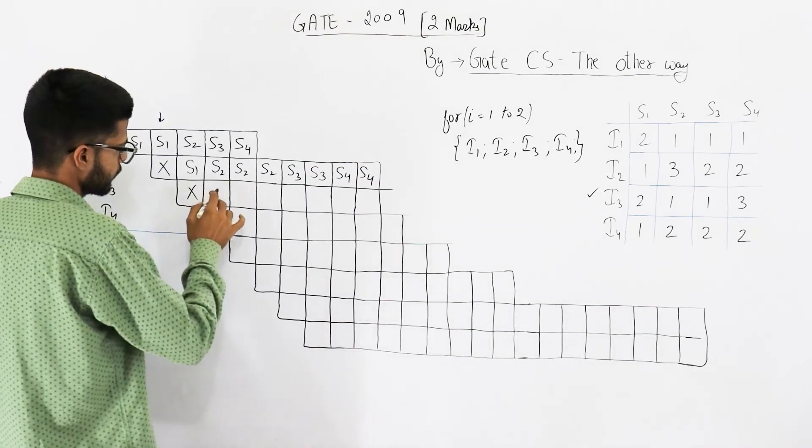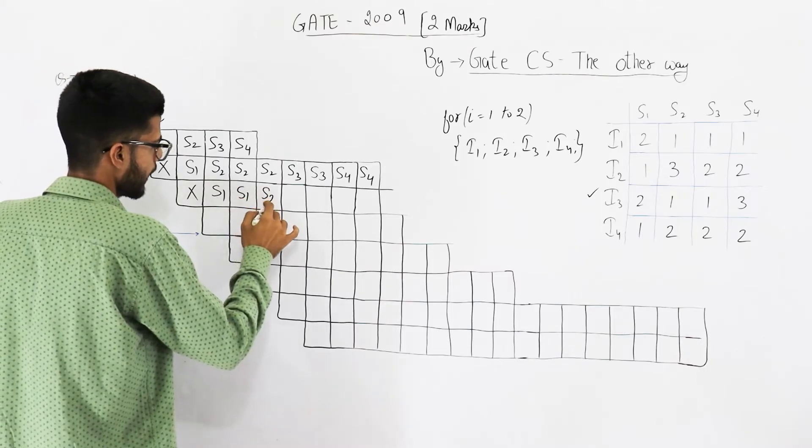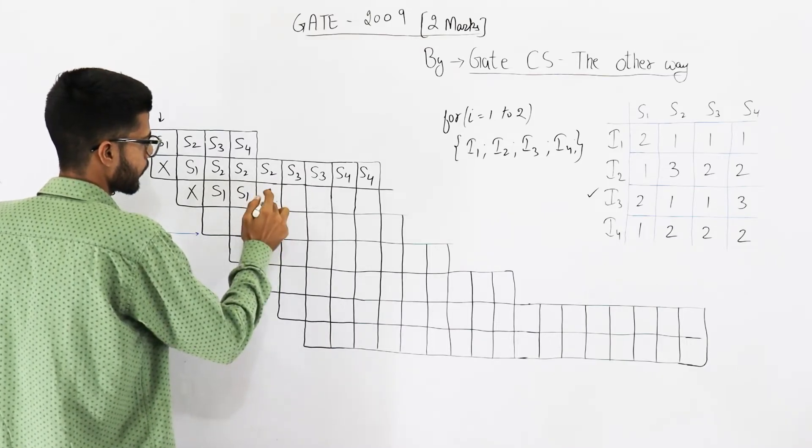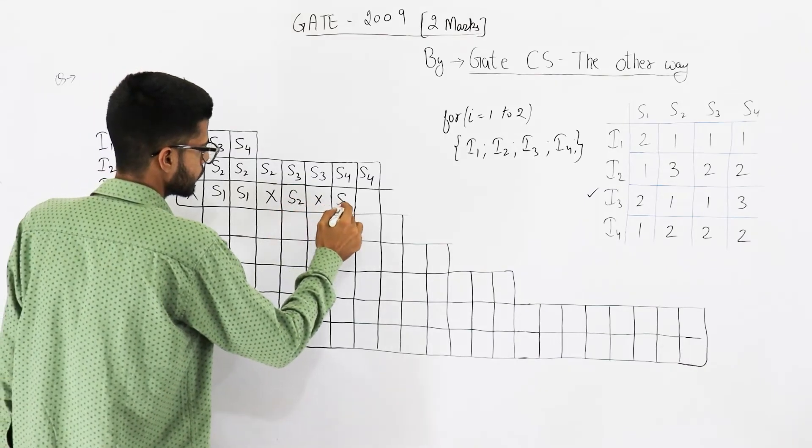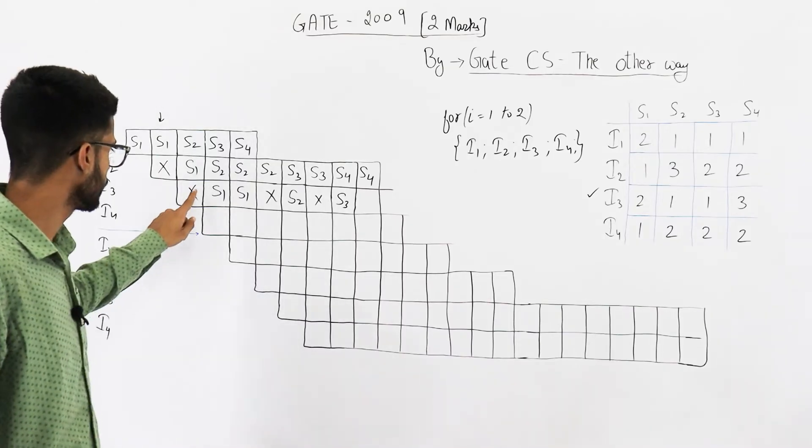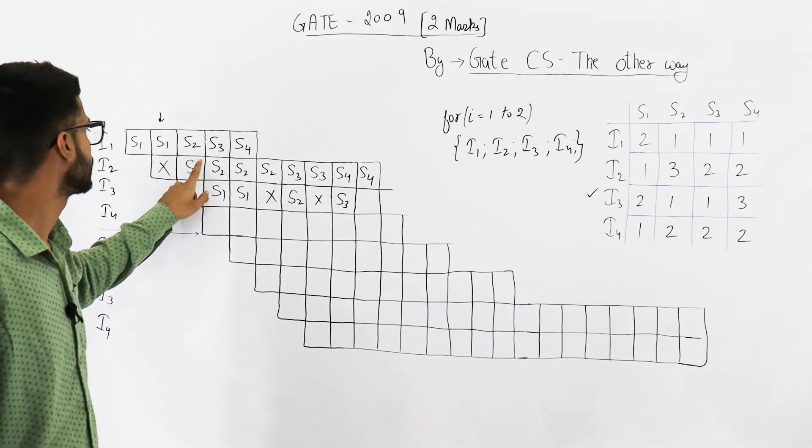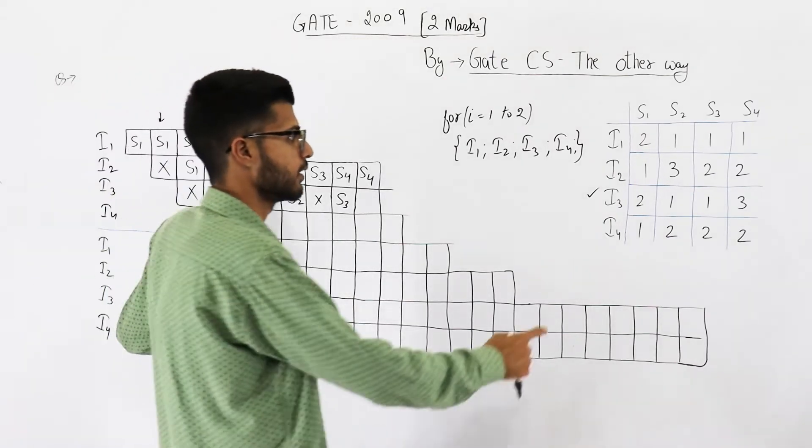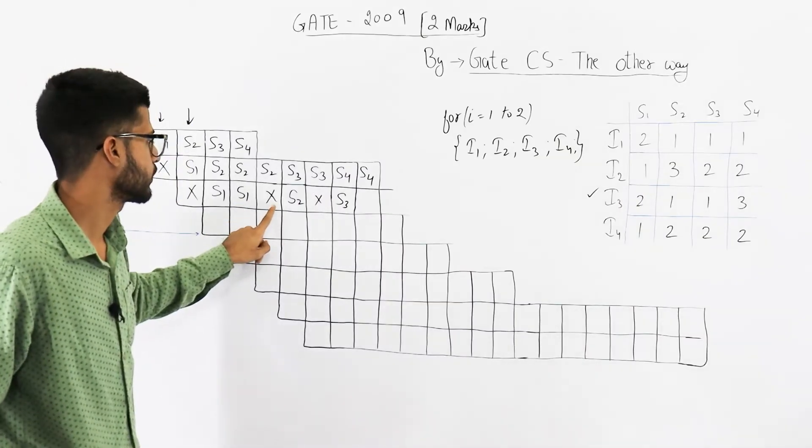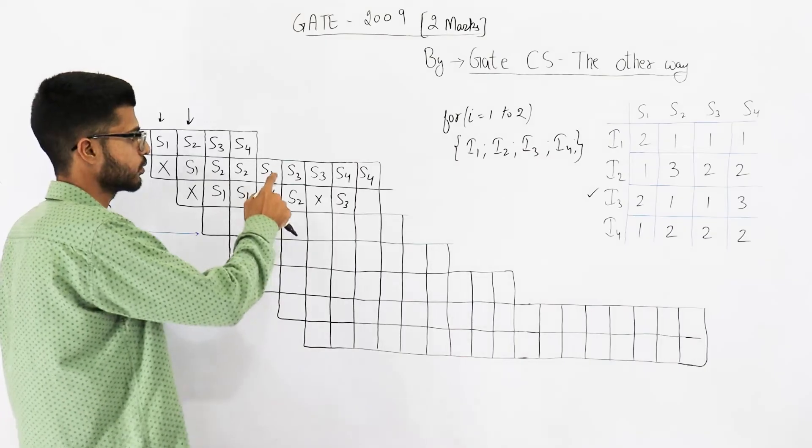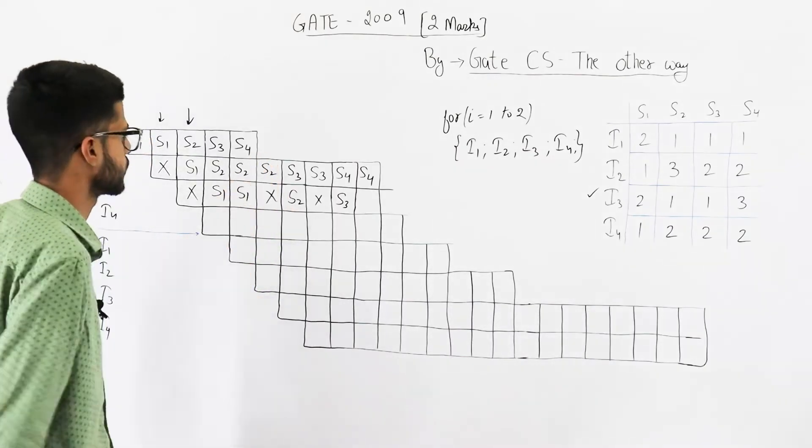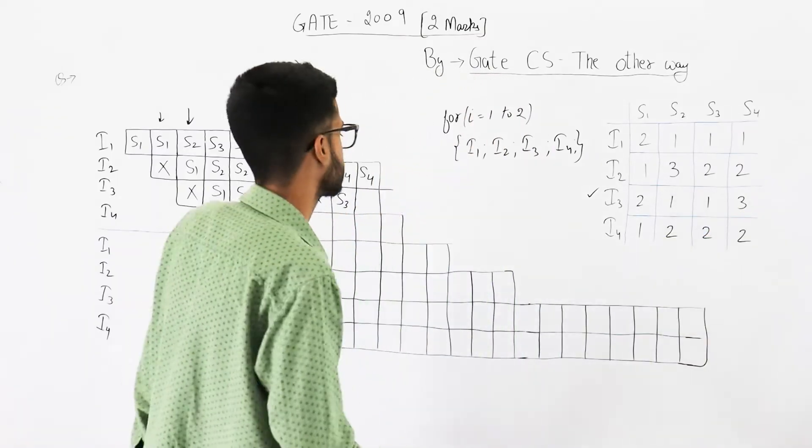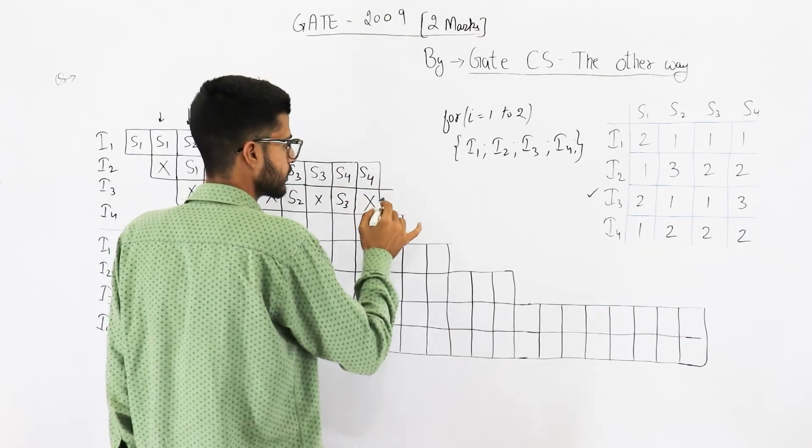Two clock cycles of s1. Sorry, this one is going to be a stall. You cannot execute s1 here because s1 is already being used by instruction two in this clock cycle. So you need to start s1 from here - two cycles of s1, then one cycle of s2, but it cannot be done here because s2 hardware is already being used by instruction two. That's the reason I wrote s2 here. Similarly s3 will be written here, then you need three clock cycles for stage s4.